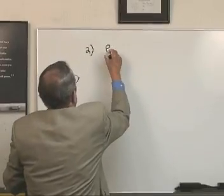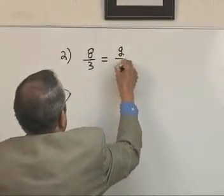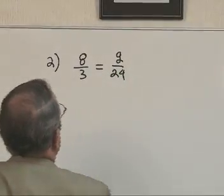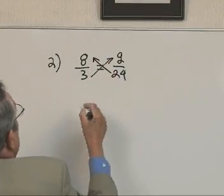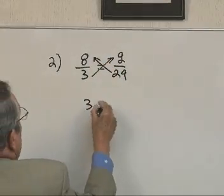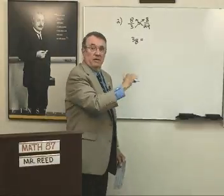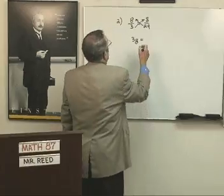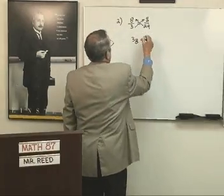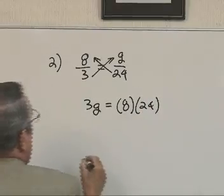How about 8 is to 3 as g is to 24? Well I can't reduce right yet but I'm going to cross multiply. Now you'll notice I always put, because mathematicians work left to right, I always put my variable on the left side. You don't have to, but it makes it easier to work with, and that equals 8 times 24.